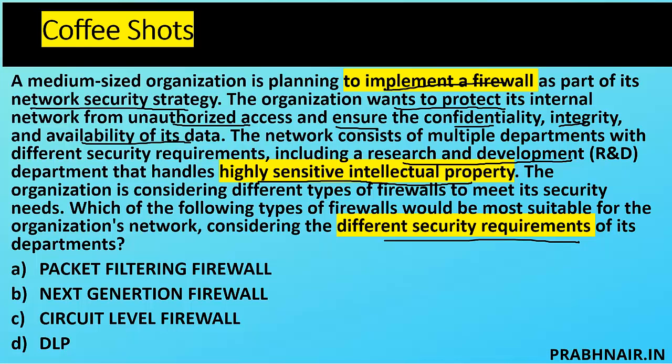A circuit-level firewall works only at the session layer, and DLP is used more for internal-to-external data protection. Since we need to protect highly sensitive intellectual property with a full network security strategy, the closest option is B — the next-generation firewall — because it works from Layer 3 to Layer 7 of the OSI model. As a consultant, understanding how NGF works is what allows you to answer this question correctly.